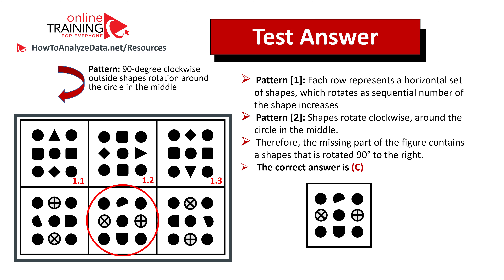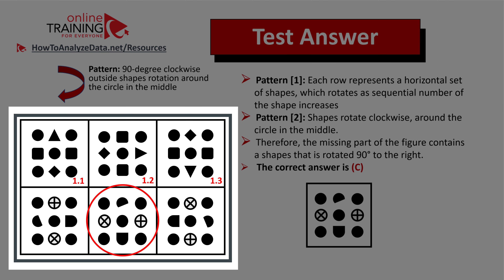As usual, my recommendation is to always look for patterns. There are two different patterns presented in this particular question. Let's look at pattern one. Pattern one defines that the shapes go in horizontal rows. For example, this is shape one, this is shape two, and this is shape three.